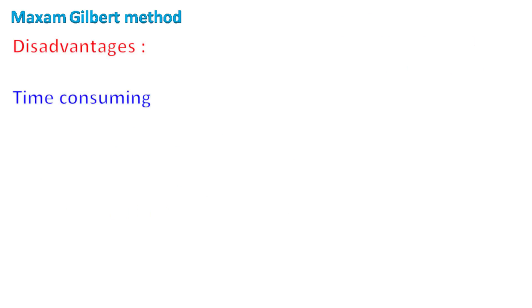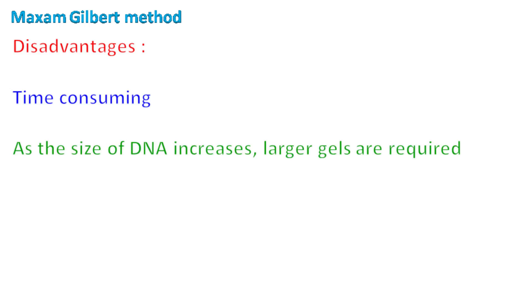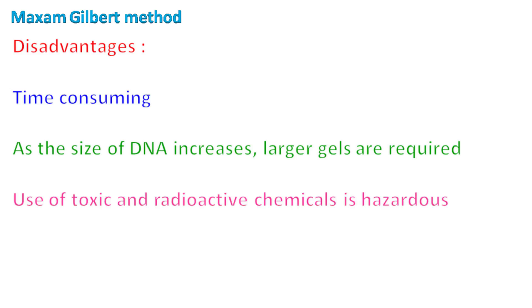The disadvantages of the Maxim-Gilbert method are that it is time-consuming, as carrying out reactions at specific bases, cleaving them, and running the gel requires a lot of time. As the size of the DNA fragment to be sequenced increases, larger gels are required for separation, and such large gels are difficult to handle. The use of toxic and radioactive chemicals is another disadvantage. Hence, this method is unpopular nowadays and rarely used, as several other sequencing techniques are available.